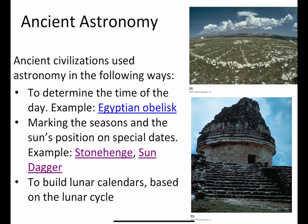Ancient civilizations used astronomy in a number of different ways. One thing they used astronomy for was to determine the time of day. You must have heard of sundials — there are very old ancient sundials all over the world. If you've seen the Egyptian obelisks, that's an example of a device used to mark the time of day using the shadow of the sun.